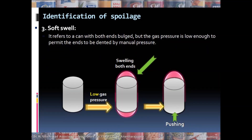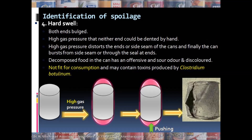A soft swell results from low gas pressure developed inside the can. When such low gas pressure is developed, both sides of the can bulge. A soft swell can be made normal by applying pressure and pushing the ends, because of the mild pressure inside. Such cans are called soft swollen cans.